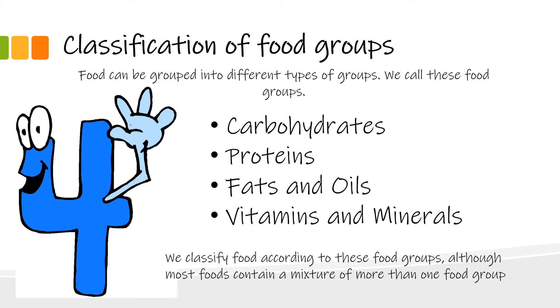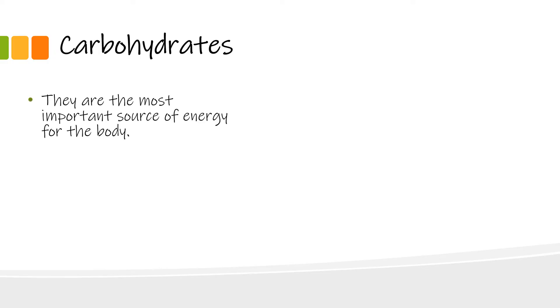We classify food according to these food groups, although most foods contain a mixture of more than one food group. Now we will look at the different food groups individually, including some of their functions as well as a few examples. The first one is carbohydrates.